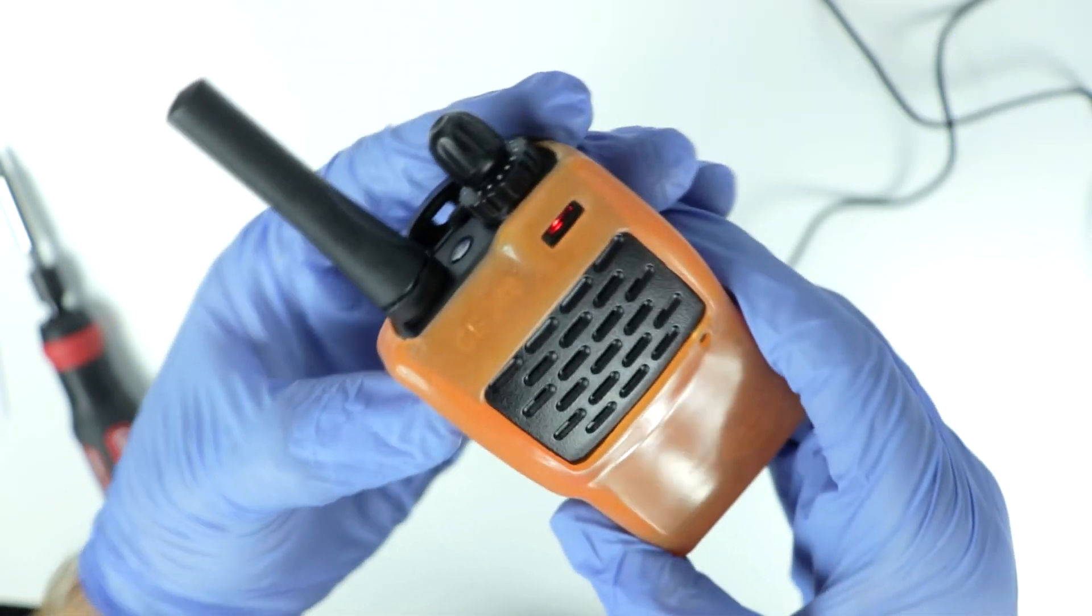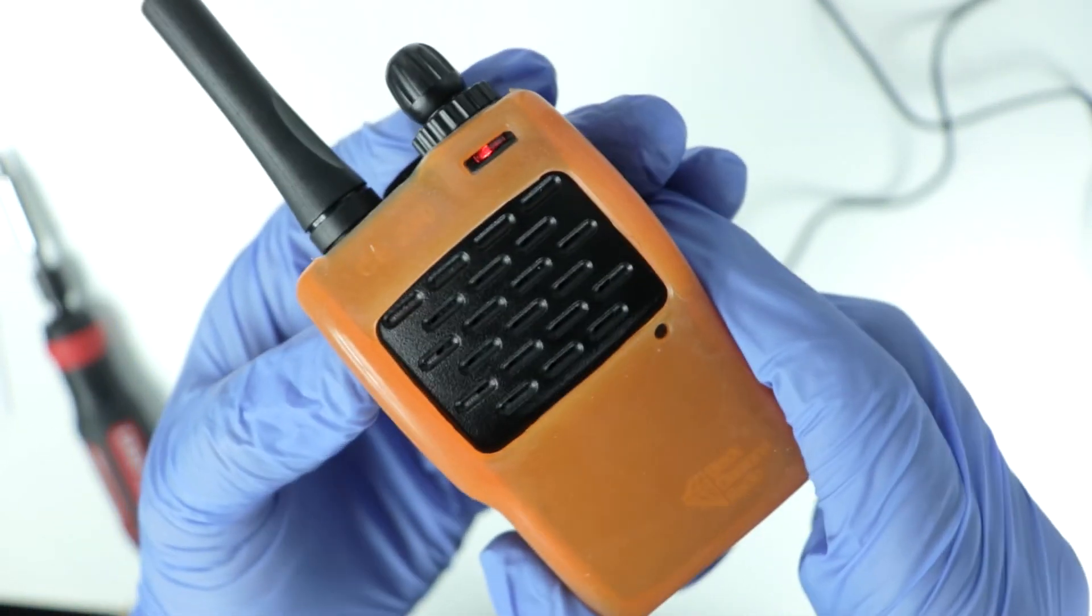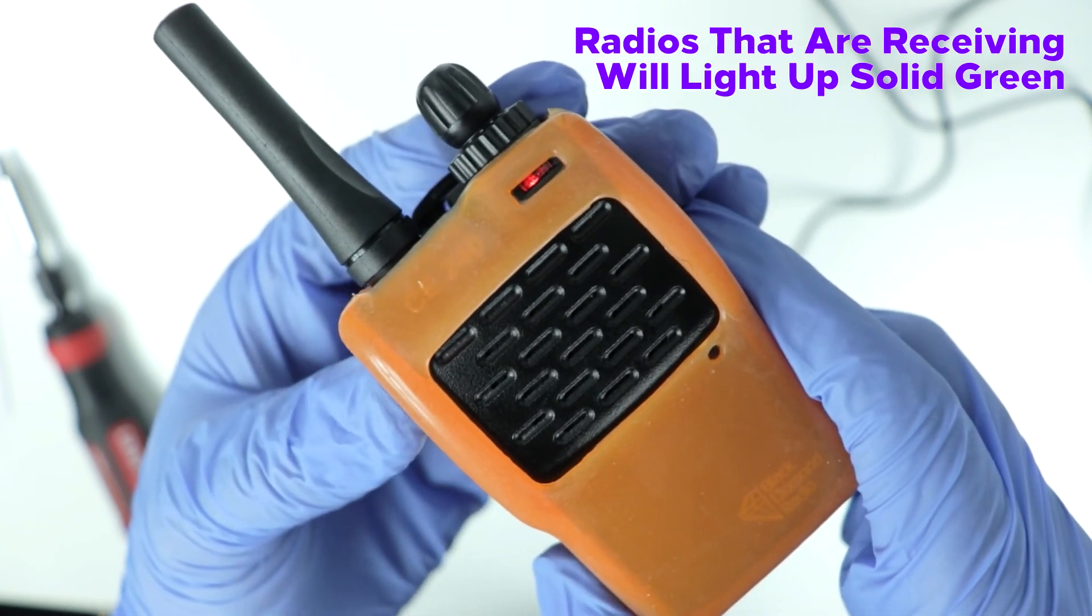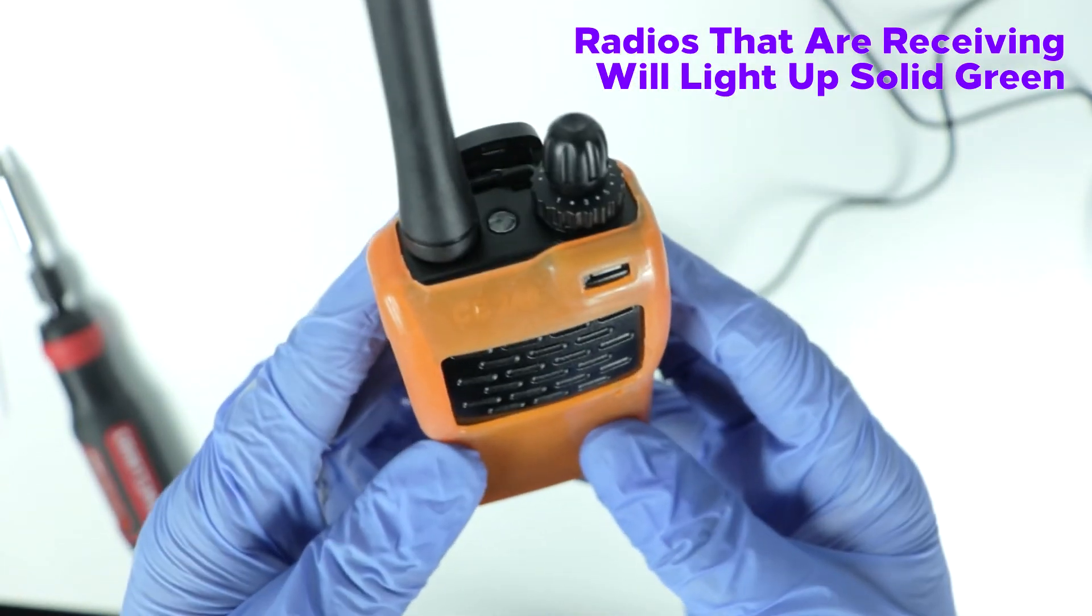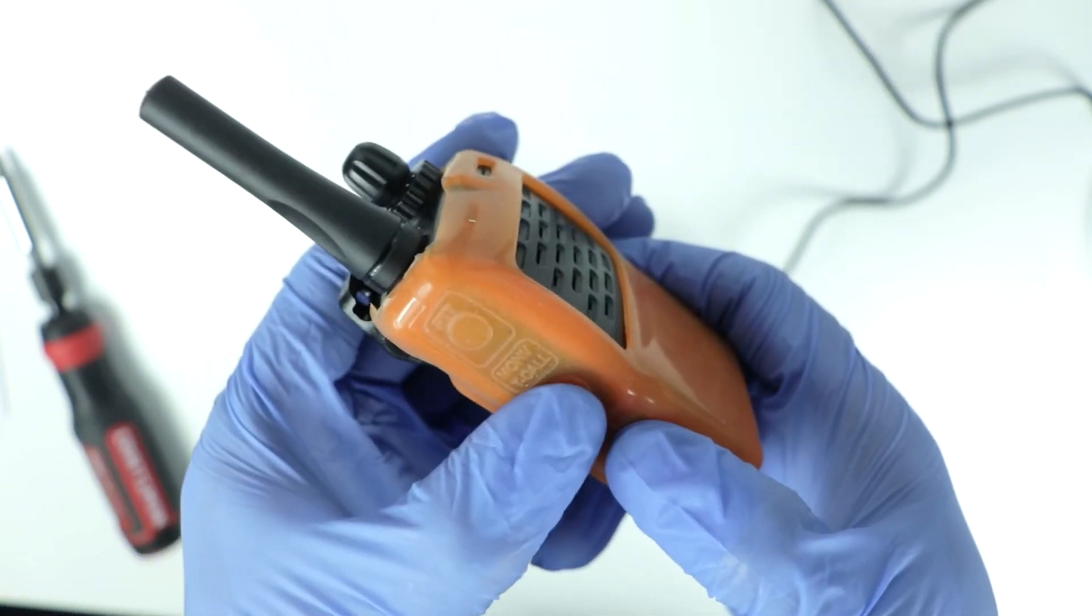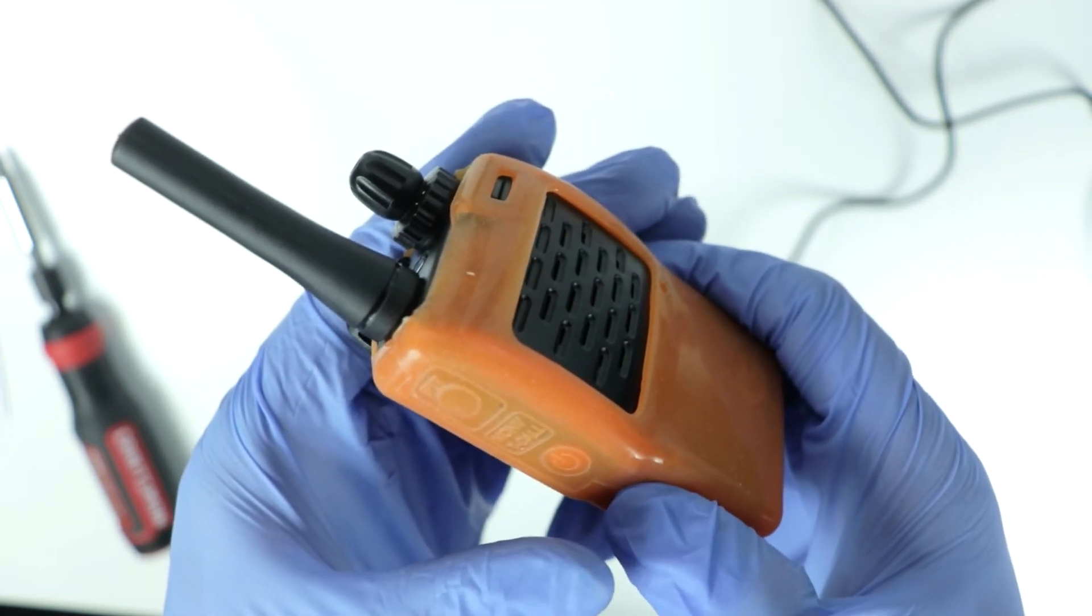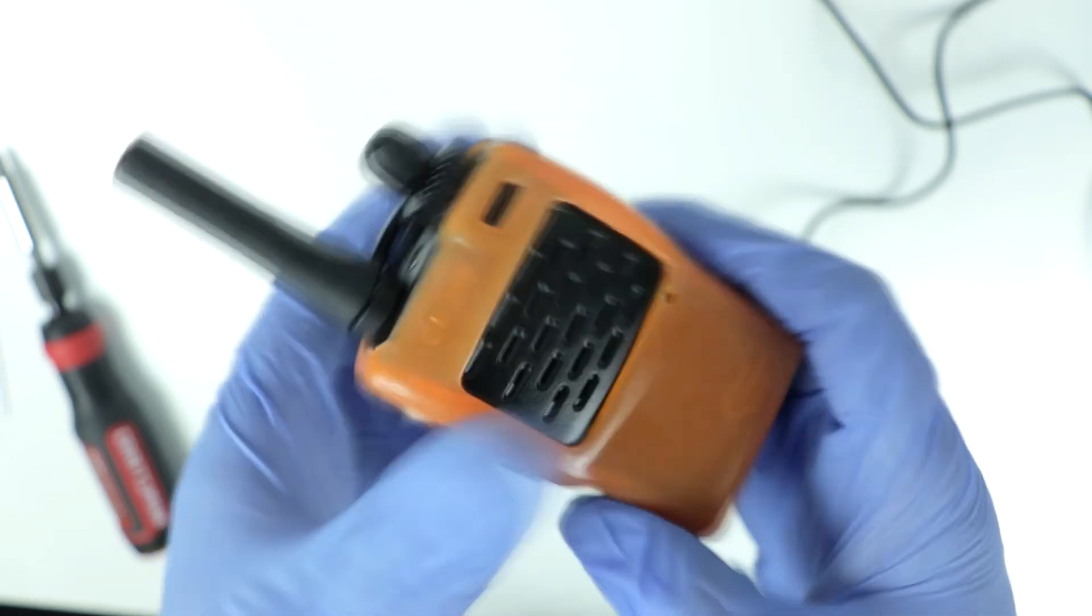Now if you press the button, push the talk button, you see the light turns red. That's because we're transmitting. So simply press that button, talking to the radio about six inches away from your face, or you may be using an earpiece. Press and hold the power button and the unit will turn off. So to power it down, press and hold. To power it on, press and hold.